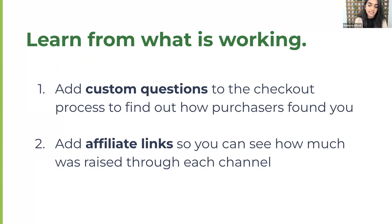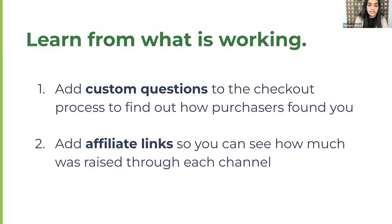With all of your ticket purchasers, the ultimate key to success will be learning from what's working. Track where your direct sales are coming from and ask where your donors came from as well. Add a custom question to the checkout process asking how they heard about your event. Use this information to watch which channels are working and put more effort there. To get a better idea of where ticket purchasers are coming from, add affiliate links so you can see where people are coming from and how much money is being raised through each channel — one for social media, one for your email signature, one for your board members to share.